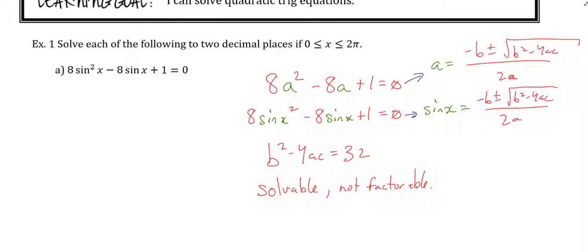Note on the side here. If I was doing this top one from grade 10 with the a's, then quadratic formula would say a = -b ± √(b² - 4ac) all over 2a. But now it's 8sin²x - 8sinx + 1. So it's sinx equals. So even though this is a lot of what we did in grade 10, and it's just kind of solving quadratics.